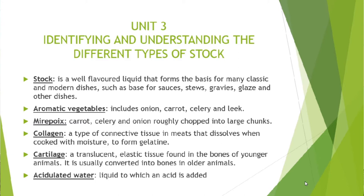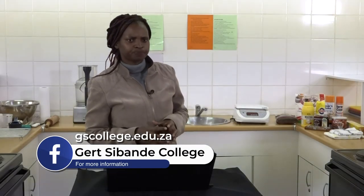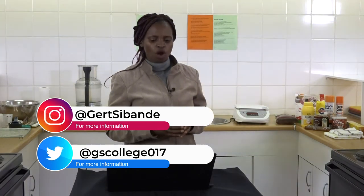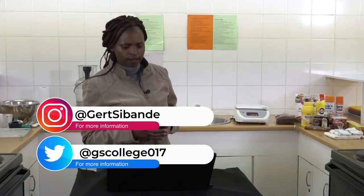Aromatic vegetables are the onion, carrots, celery as well as leeks — they help your stock to have a good flavor. The mirepoix refers to the vegetables used when we prepare the stock: carrots, celery and onion, roughly chopped into large chunks. Collagen is a type of connective tissue in meats that dissolves when cooked with moisture to form gelatin — for example, chicken feet produce a thick gravy because of the high gelatin content.